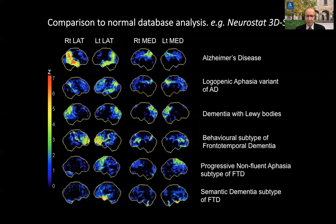Progressive non-fluent aphasia, a subtype of FTD presenting with progressive non-fluent speech disorder, is mainly a tau-based disease affecting the left dorsal frontal cortex — knocking out Broca's area — visible on both lateral and medial views. Semantic dementia, another FTD subtype related to TDP-43, shows hypometabolism in the anterior pole of the left temporal lobe.